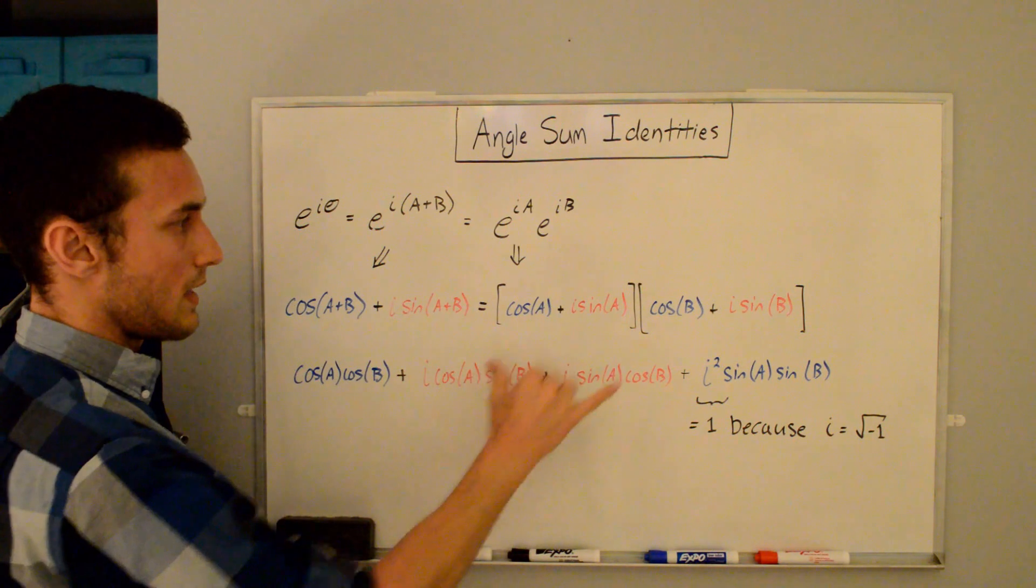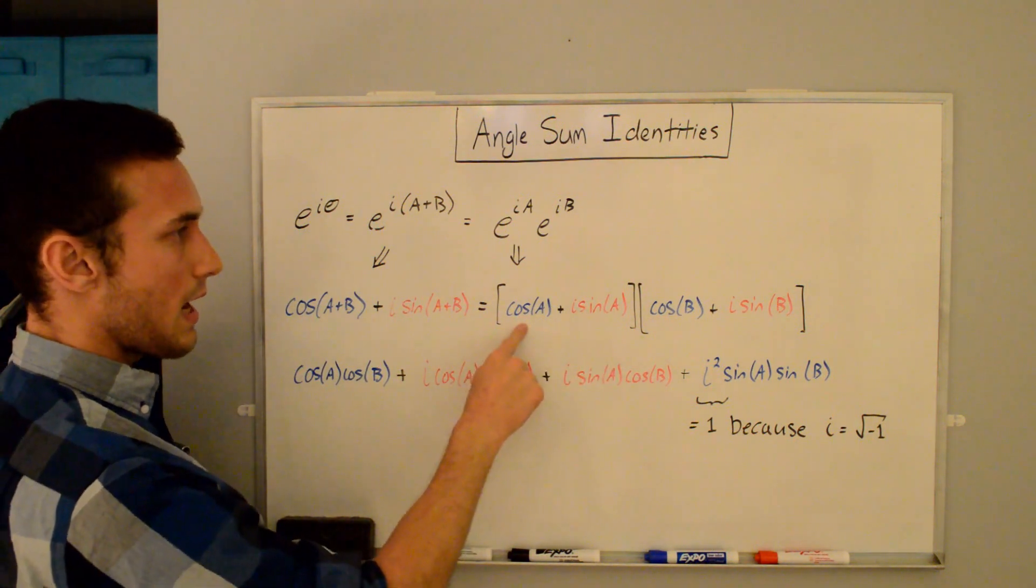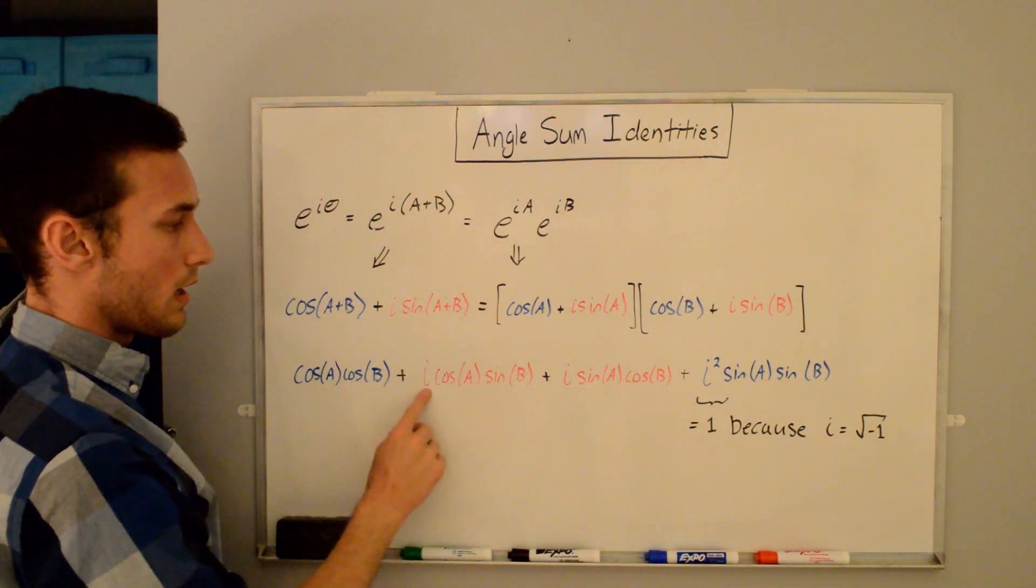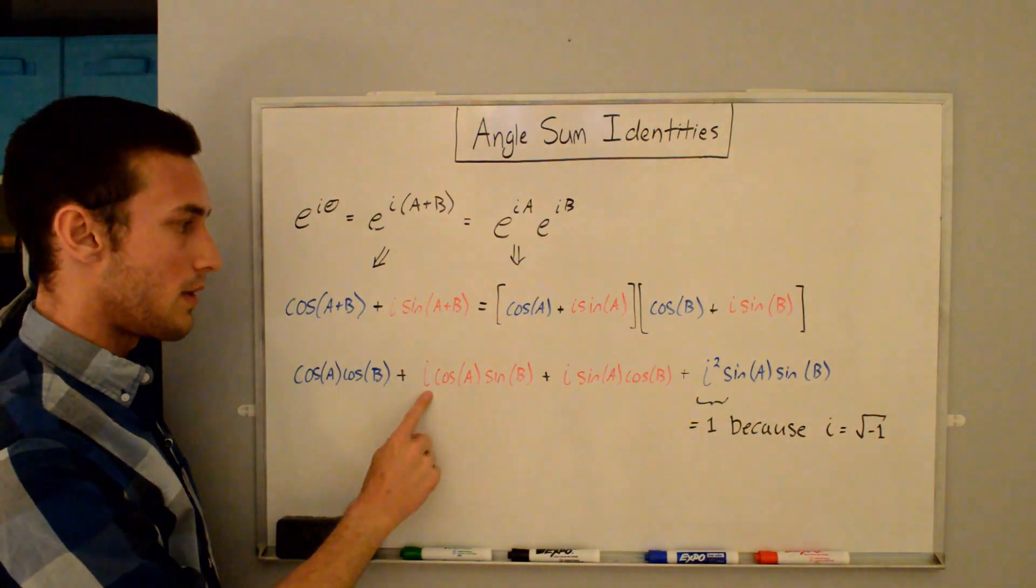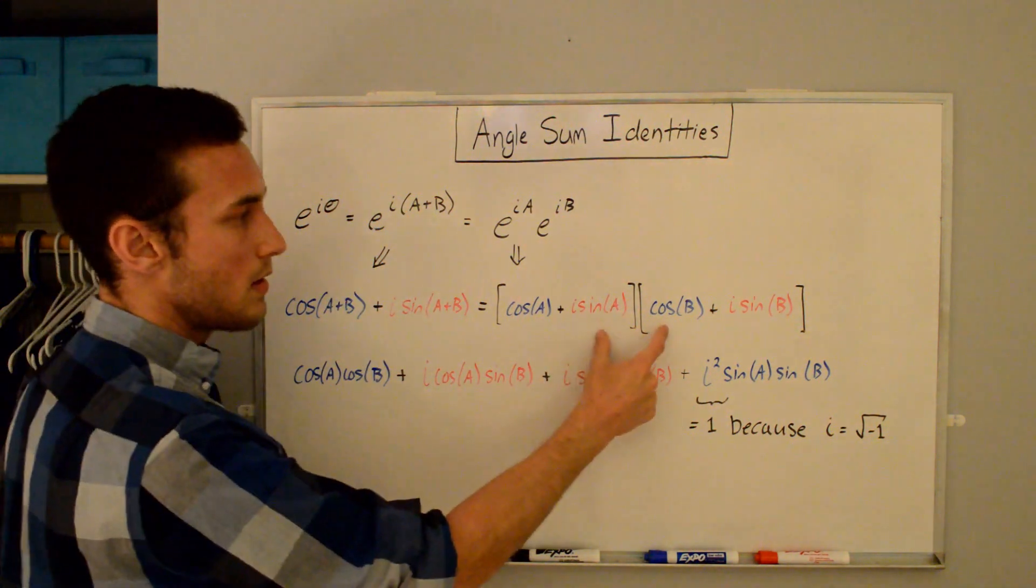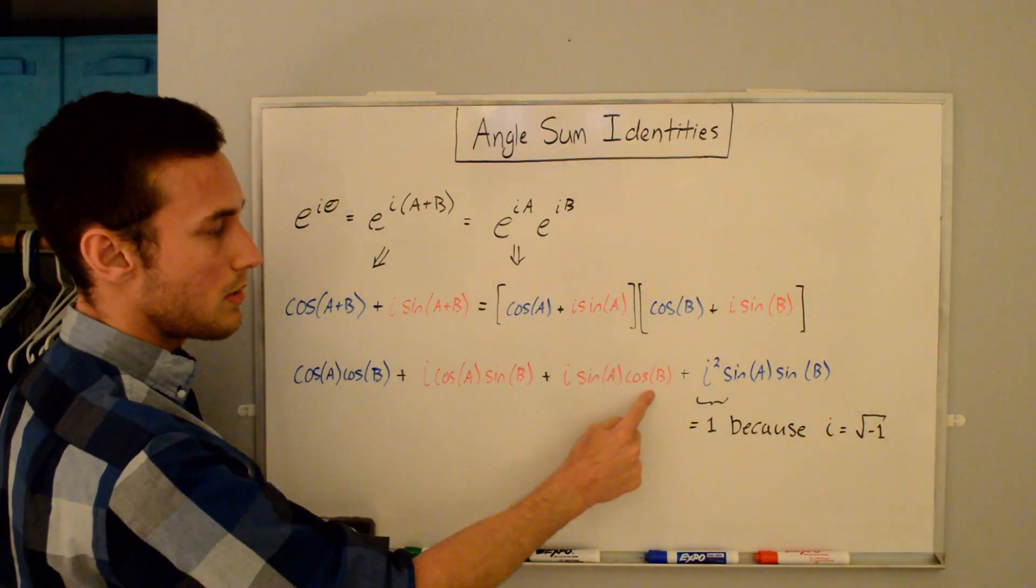And then the second is the outer. So we end up having cos(A) times i·sin(B). And even though this is the real part here, it becomes an imaginary because we have the i here. So we have i·cos(A)·sin(B). Now we have inner, which is going to be i·sin(A)·cos(B).